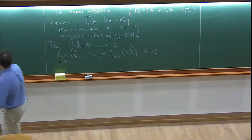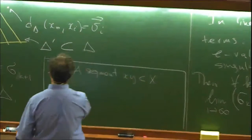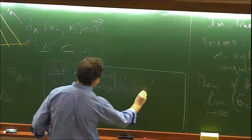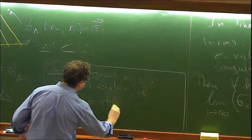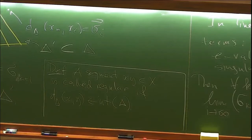One more definition before going to discrete groups: a segment x to y in X is called regular if d-delta from x to y lies in the interior of delta. It's a classical definition from the theory of symmetric spaces. A segment going along the wall is not regular, but a segment going into the interior will be regular. Regular segments behave nicer than irregular ones in many ways.